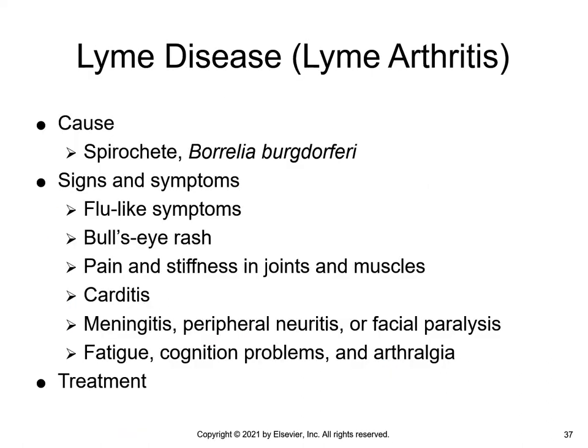Diagnosis for Lyme disease is based on clinical presentation and the possibility of being exposed to infected ticks. In early stages, lab testing is not reliable and is not recommended. If Lyme disease is undiagnosed or untreated, Stage 2 begins 2 to 4 weeks after the infection, with carditis, nervous system disorders like meningitis, peripheral neuritis, or facial paralysis similar to Bell's palsy. If it still goes undiagnosed, later complications may include fatigue, cognition problems, and arthralgias. In some instances, the only sign of Lyme disease is arthritis, which may cause permanent damage to the nervous system and joints.